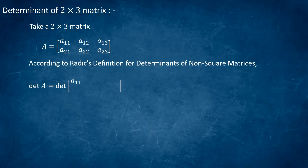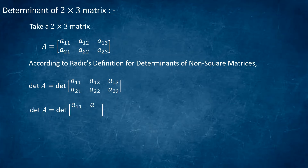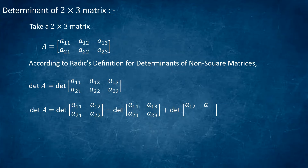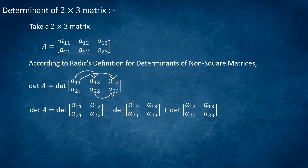The determinant of A will be equal to the determinant of [a11, a12, a13; a21, a22, a23]. According to Roddick's definition, the determinant of A equals the determinant of [a11, a12; a21, a22] minus the determinant of [a11, a13; a21, a23] plus the determinant of [a12, a13; a22, a23]. Here we have associated column 1 with column 2, then column 1 with column 3, and then column 2 with column 3.